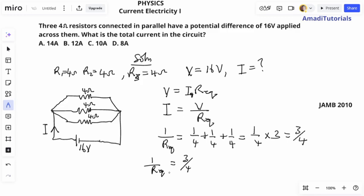Then if you take the reciprocal of both sides, R equivalent will be four over three ohms. So the equivalent resistance is four over three ohms. But it's not equivalent resistance we're asked to find. We have to find current.